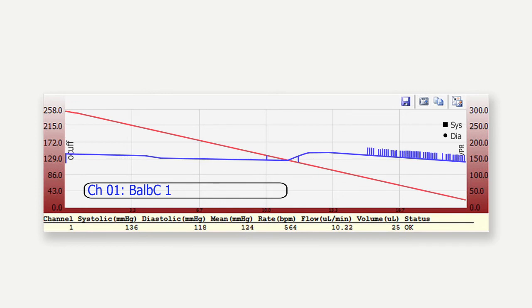As the occlusion cuff deflates, blood will flow back through the tail across the VPR cuff, which is represented by an upward curve in the blue line on the graph. Heart rate pulses are notated by short vertical lines and are measured towards the end of the cycle. Systolic and diastolic measurements are noted at the bottom of the graph.